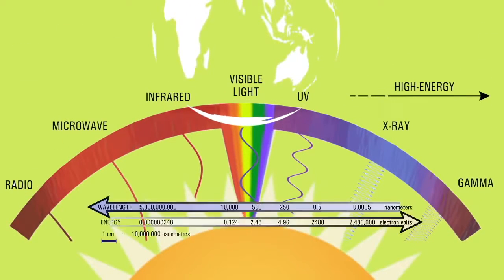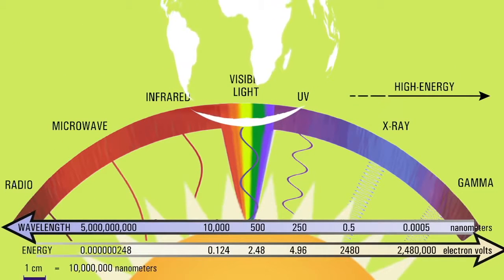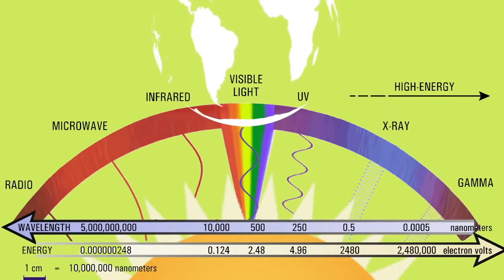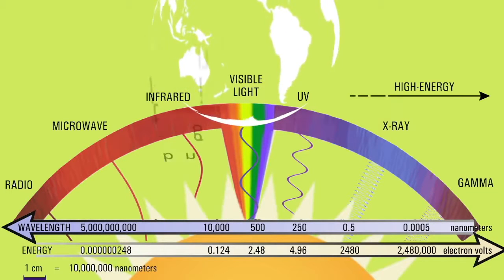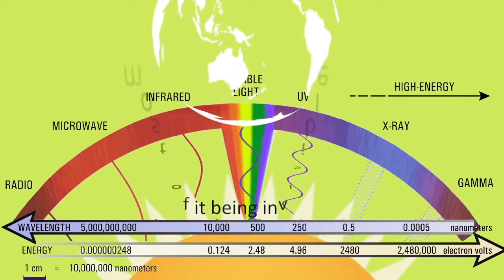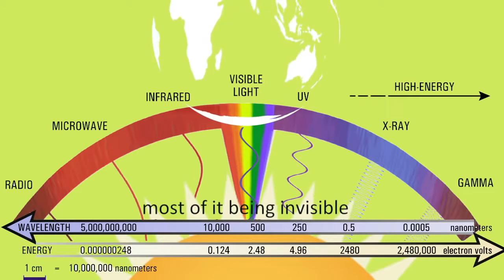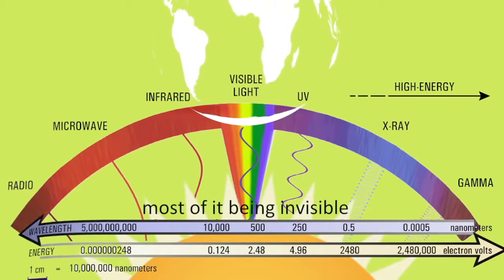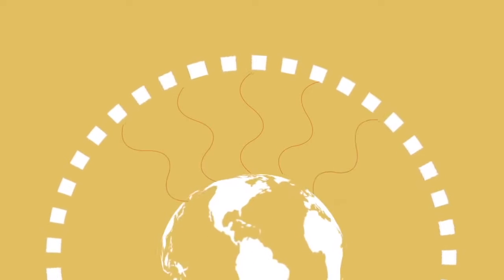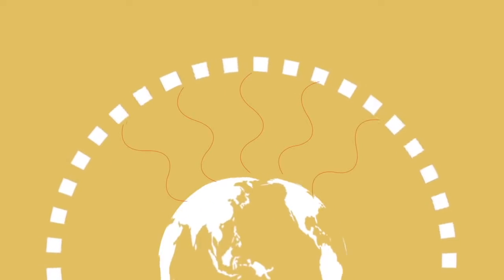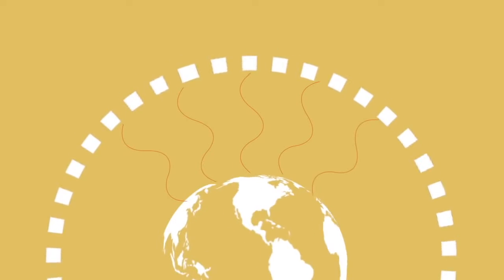Each helium collision releases a neutron at different speeds with different wavelengths. The X-ray and gamma rays are deflected by our ozone, but the UV rays are allowed in and carry the most energy. This energy then passes the Earth's ozone layer, reaching us.